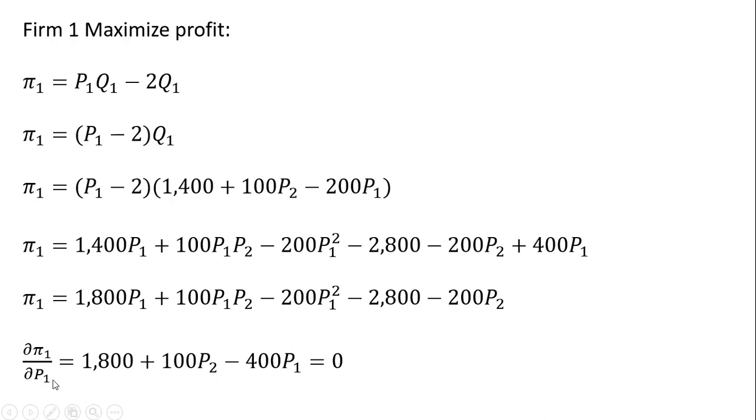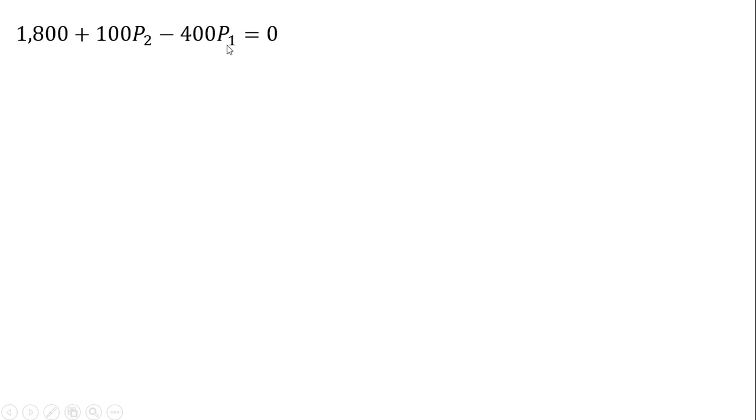Now we're ready to maximize profit by selecting our choice variable price, trying to find the optimal price. We take the partial derivative of the profit function with respect to firm 1's price. We get 1800 from this. Partial derivative of this next term is 100 times firm 2's price. The partial derivative of this next term here gives us minus 400 times firm 1's price. And the partial derivative of these last two terms just cancel, they're zero. Because we're maximizing, we set this result equal to zero.